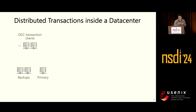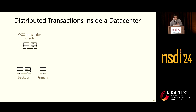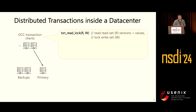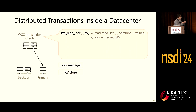Let me quickly go through the background of how distributed transactions work inside a single data center — we are focusing within a single data center, not across a WAN. The popular protocol is OCC, or Optimistic Concurrency Control, working on a set of replicated key-value stores with primaries and backups. The transaction client first performs read-log operations to read the versions and values of the read-set keys, and then logs the write-set keys. Two key components in the transaction server are the log manager and the key-value store.